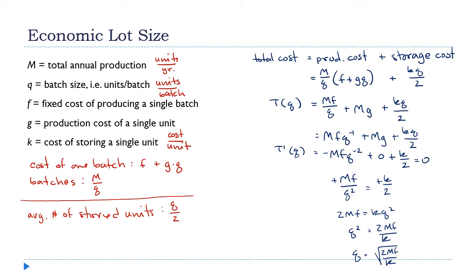A couple of interesting things happened here. Notice that g — the production cost per unit — doesn't appear in the final formula. It disappeared when we took the derivative. So it doesn't matter how much it costs to produce a single unit; that's not a factor in the optimal batch size.